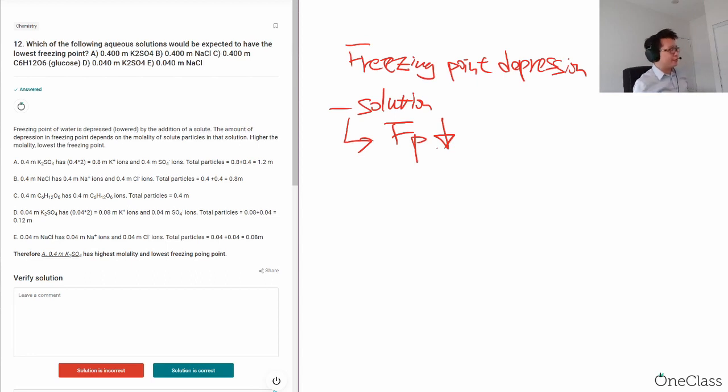We have 0.4 molality potassium sulfate, 0.4 sodium chloride, 0.4 glucose, and also 0.04 potassium sulfate and 0.04 sodium chloride.